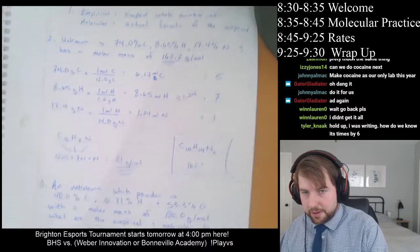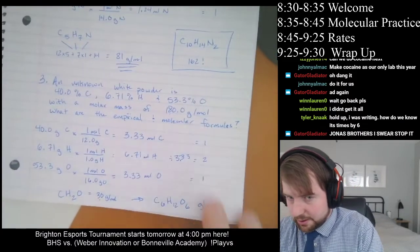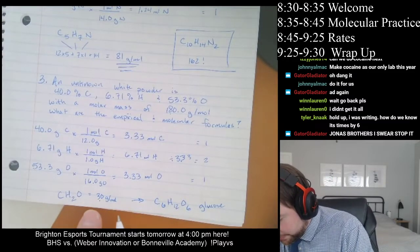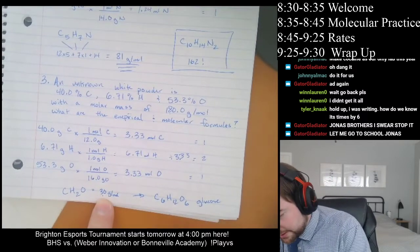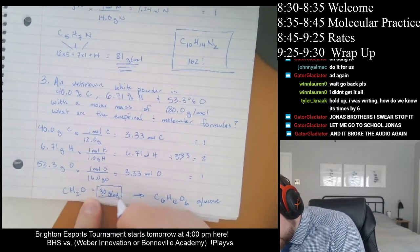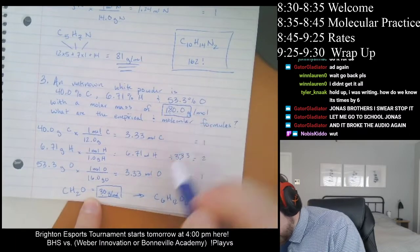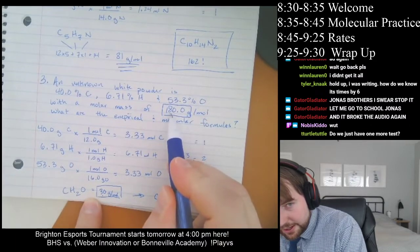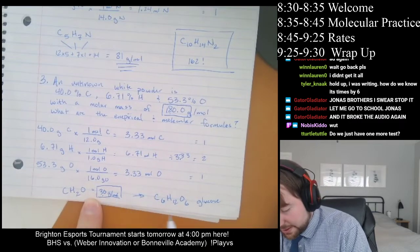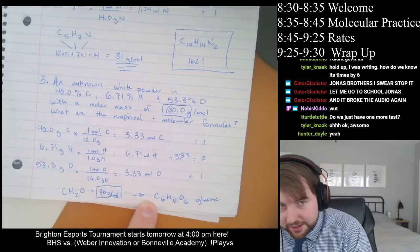I should do a better job explaining that. The reason why we know it's times 6 is we compare the 30 to the 180 that was given in the problem. If you take 180 and divide it by 30, you get 6. So that's how we know C₆H₁₂O₆, because adding that up gives us our 180.